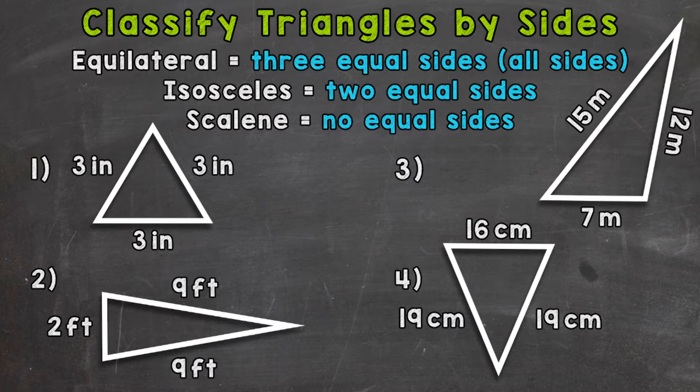So let's go through four triangle examples and classify them based on their sides. We'll start with number one.